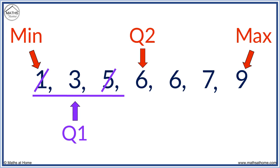Now to find Q3, we look at the data to the right of the median. We find the median of this. We get seven. Q3 equals seven.